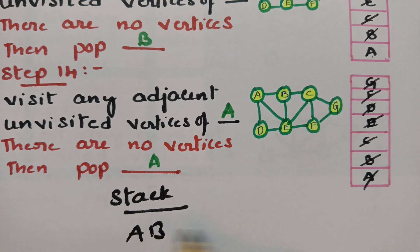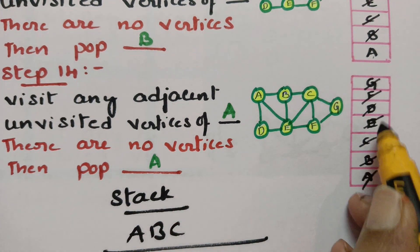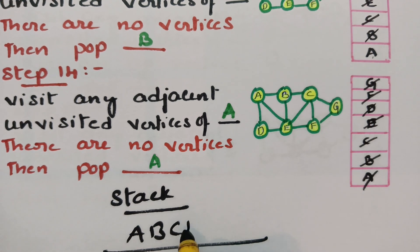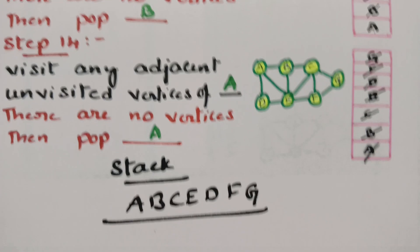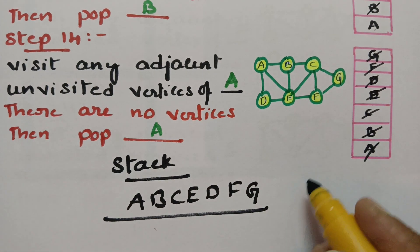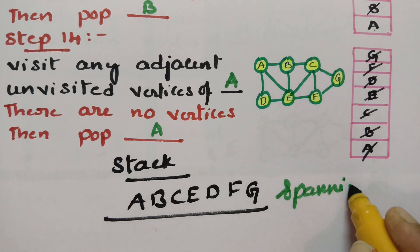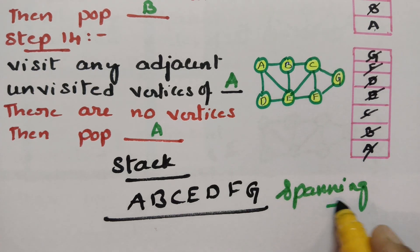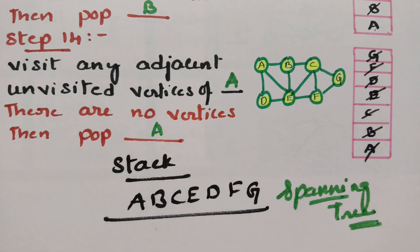The stack order is A, B, C, E, D, F, G. These are the vertices which give you a spanning tree. This is how depth first search algorithm helps in constructing a spanning tree.